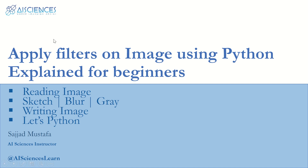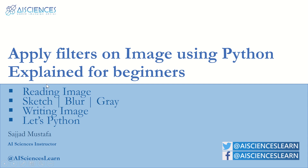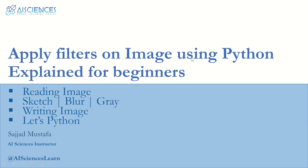Hello guys, welcome to AI Sciences. I am your instructor Sajad Mustafa, and today we are going to apply filters on images. Filters are very famous nowadays — you use filters on Instagram and social media apps. We are going to apply filters using Python: first reading an image, then applying a sketch, blur filters, and converting a color image to grayscale.